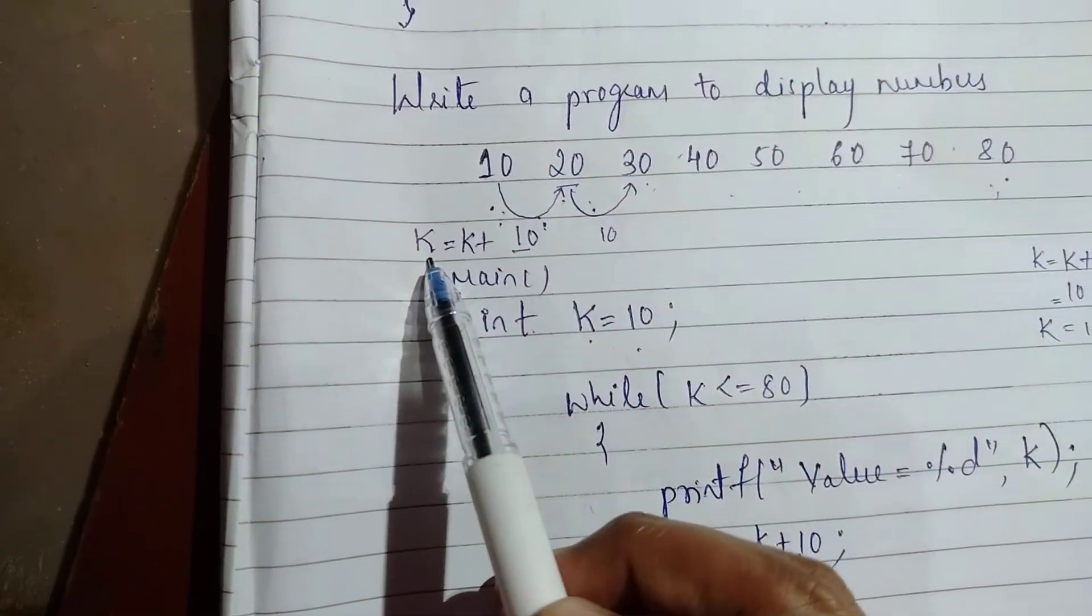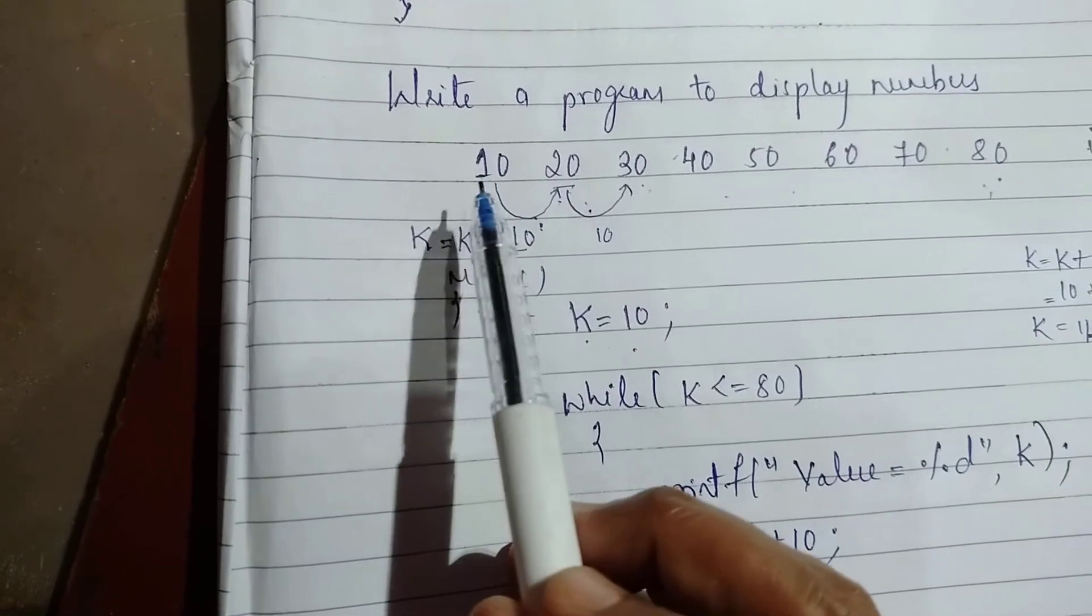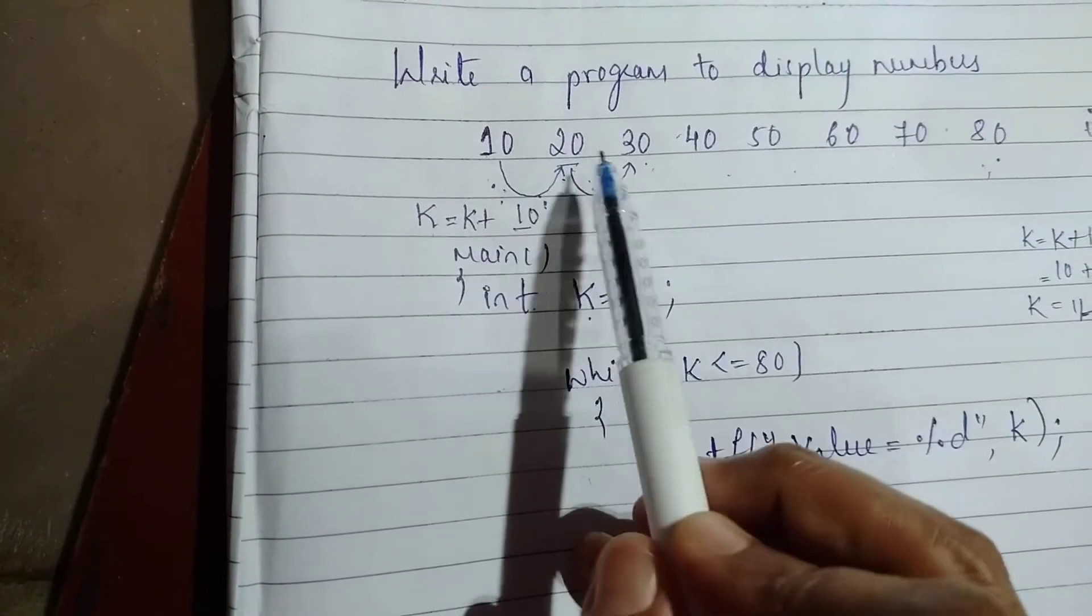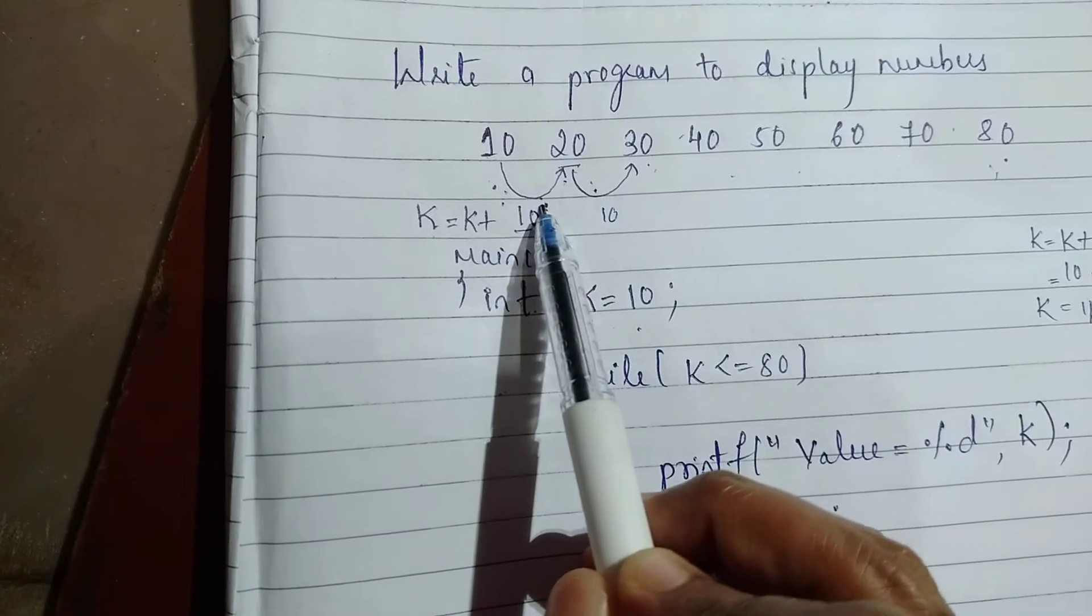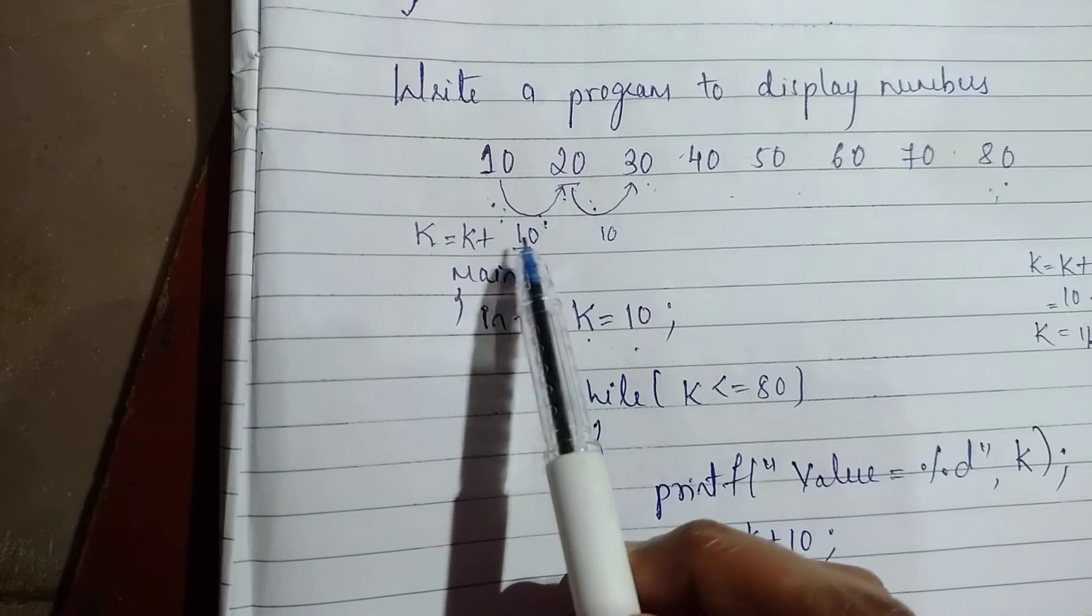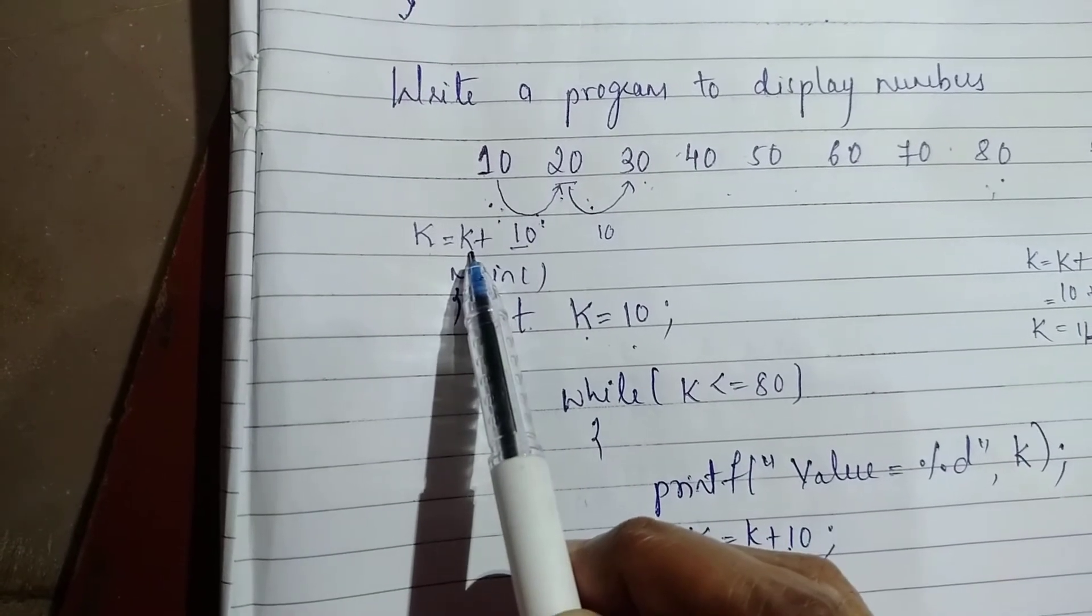I'm taking a counter K which is assigned to the initial value 10. The difference between each number is 10. So I am going to assign this value to K where